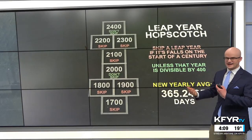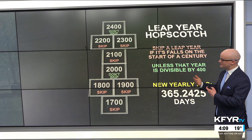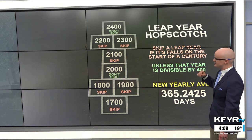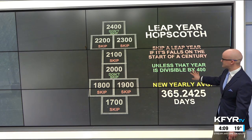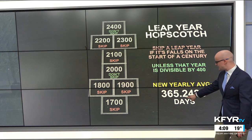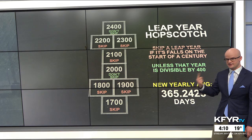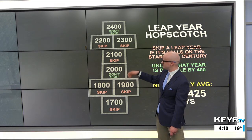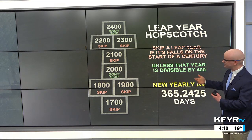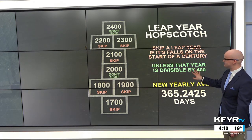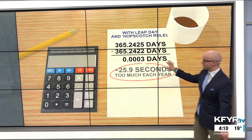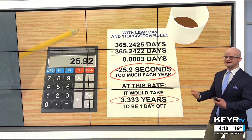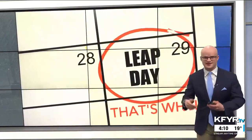So in order to get it as precise as possible, leap year kind of follows this hopscotch, where we skip a leap year if it falls on the start of a century. So in the year 2000, we did not skip the leap year, unless that year is divisible by 400. So the yearly average is now pretty close to the actual amount it takes to go around the sun — 365.2425. So 1700, 1800, 1900, we skipped the leap year. 2000 we didn't skip, unless that century mark is divisible by 400. With that hopscotch rule, we're just down to 26 seconds too much each year, and at this rate it would take more than 3,000 years to be one day off.